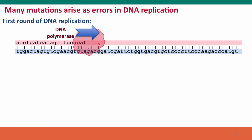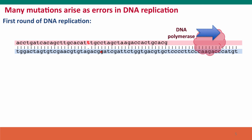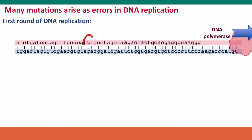Here's a diagram showing how mutations arise in DNA replication. DNA polymerase is in the process of replicating a template strand, making a new strand. It should put in a C at this position opposite the G, but instead it puts in a T — it makes a mistake. This creates a structure that we call a mismatch.